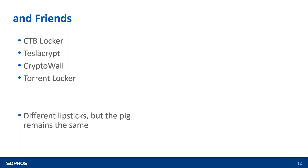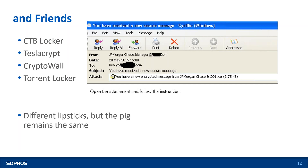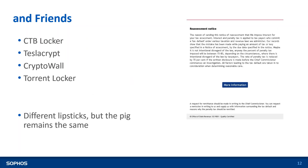As it is said, it's a different lipstick but the pig remains the same — the execution method is different, but at the end of the day, it ends with you paying the ransom. You might receive an attachment saying you have an encrypted message from JPMorgan and Chase.rar, or a reassessment notice about tax defaulters asking you to click for more information, redirecting you to a specific link.